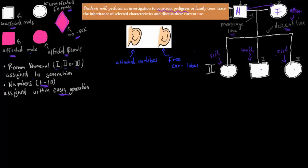Now it says construct a pedigree tree relevant to your family. I'll construct a pedigree tree based on my own family. The trait we're looking at is attached earlobes versus free earlobes. Once we've constructed the tree, we can figure out which one is recessive and which one is dominant.